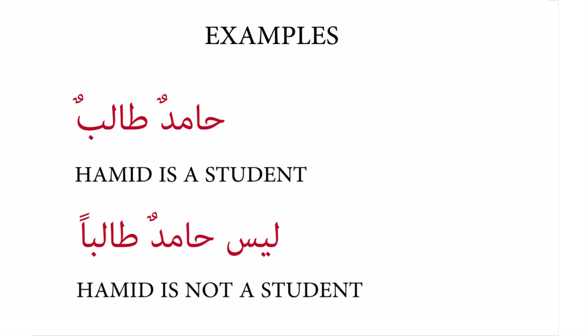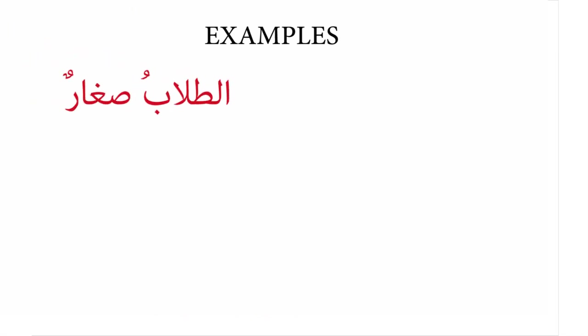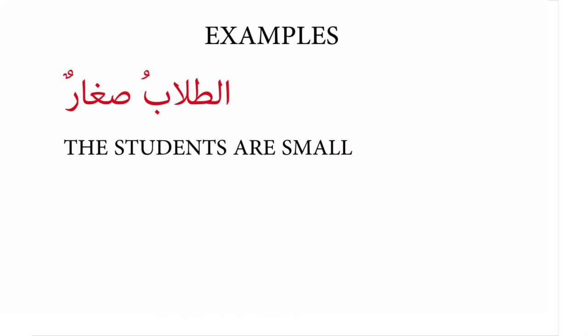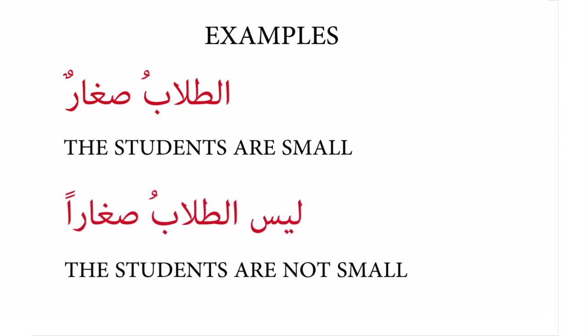Example two: ad tulabu sigharun — 'the students are small.' Ad tulab is a masculine plural noun. But when we add leysa at the beginning of the sentence — leysa ad tulabu sigharun — we use leysa, the masculine singular form, because leysa is placed first. Ad tulabu becomes isam leysa, and sigharun changes to the accusative case as khabar leysa, taking that extra aleph because it's a masculine adjective.